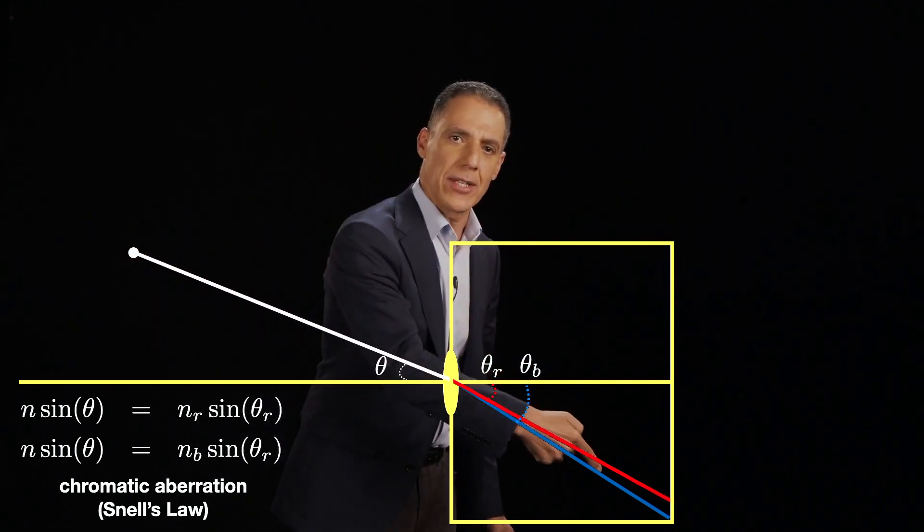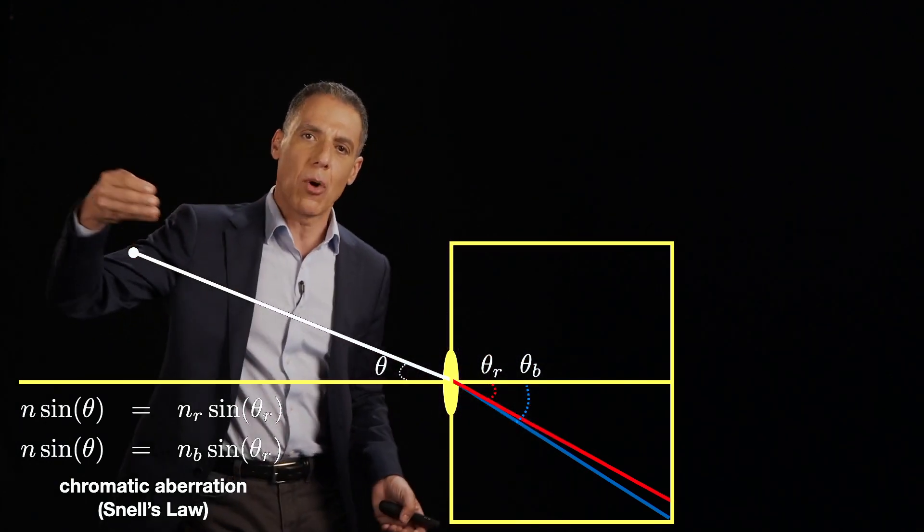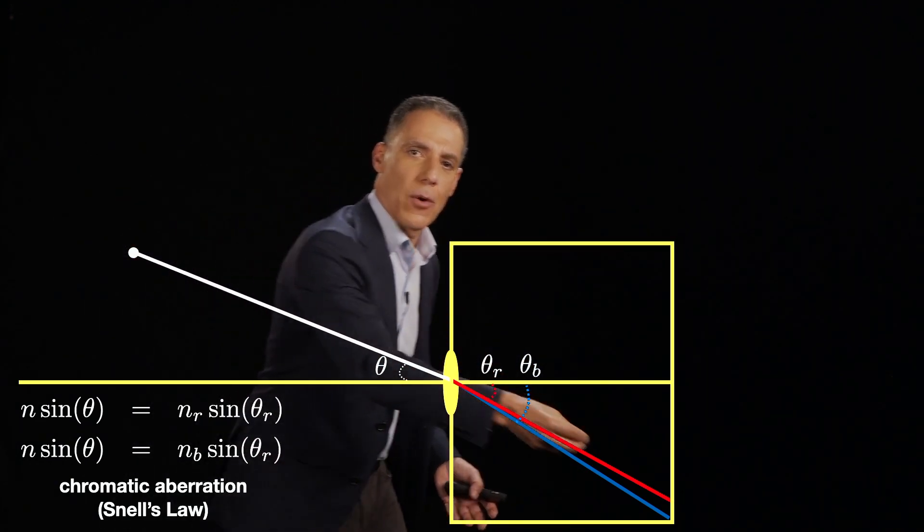We had our optical axis here, and we had a point out in the world, and I would draw a ray here, and I would bend it, and it would focus, and everything was good. Or I had multiple rays maybe, and they would focus, and everything was good.